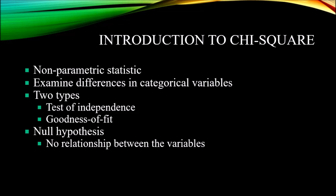The null hypothesis for the chi-square test is that there is no relationship between the variables — so the variables are, in fact, independent. The alternative hypothesis would be that the variables are dependent.